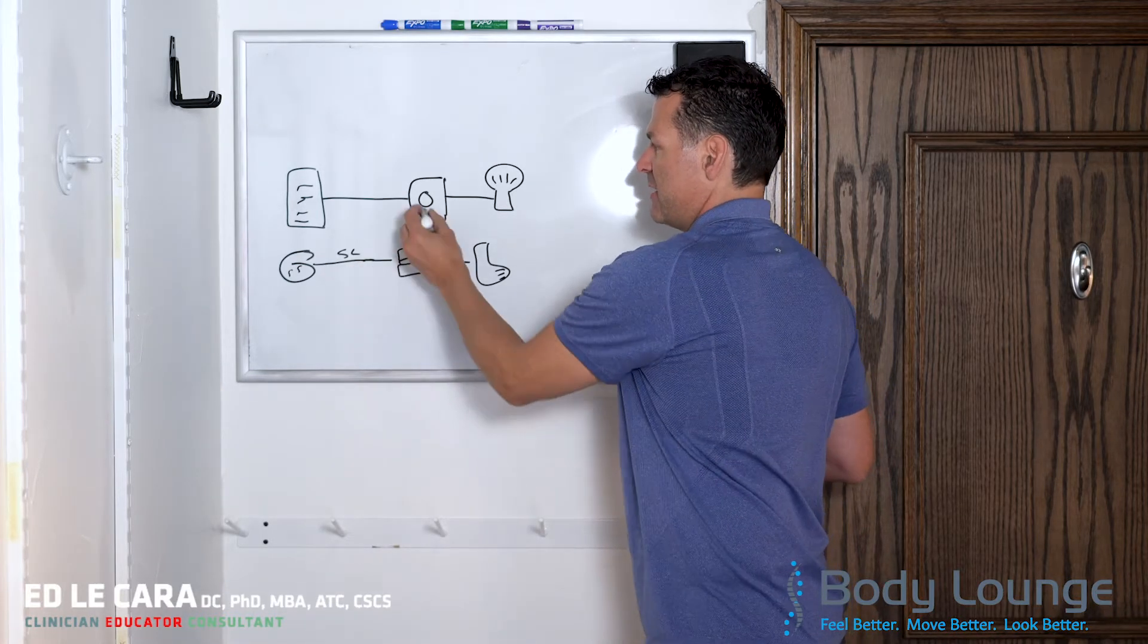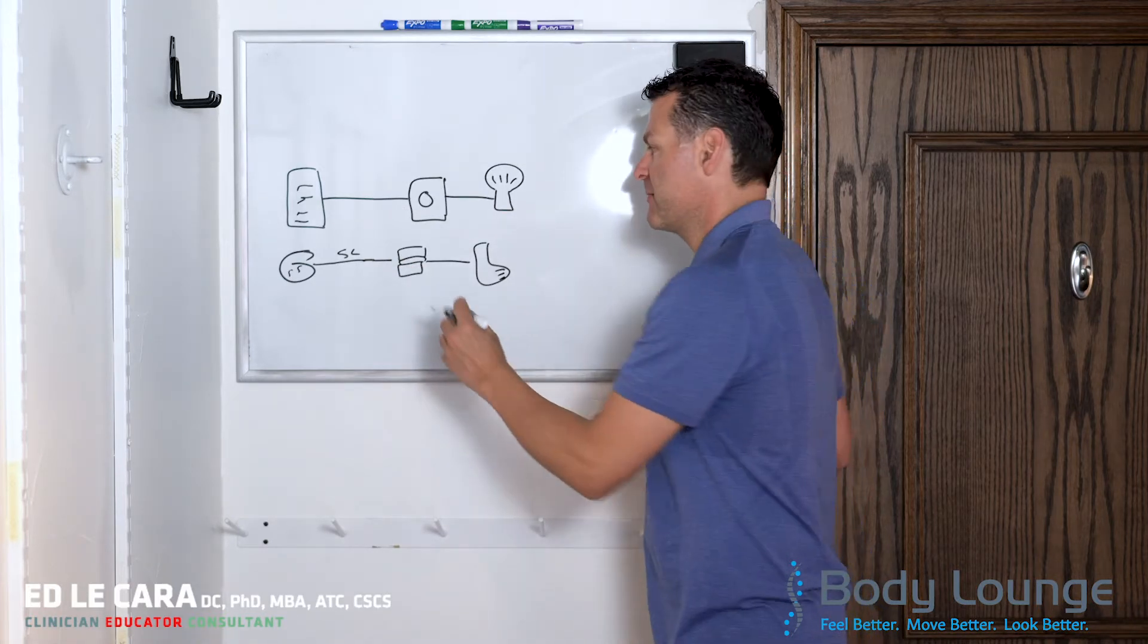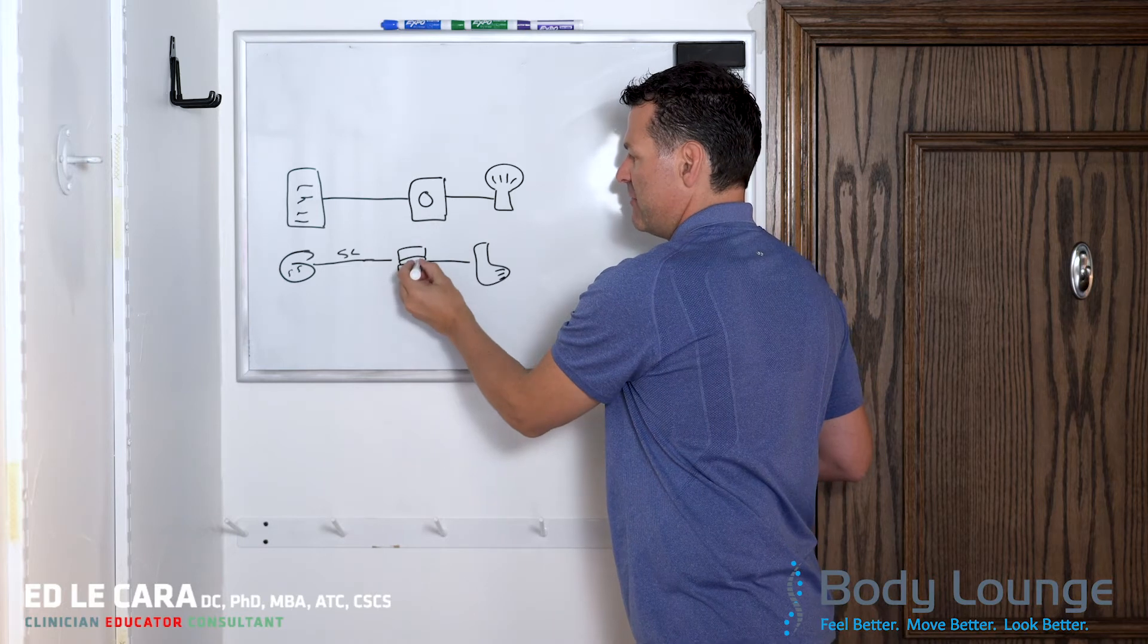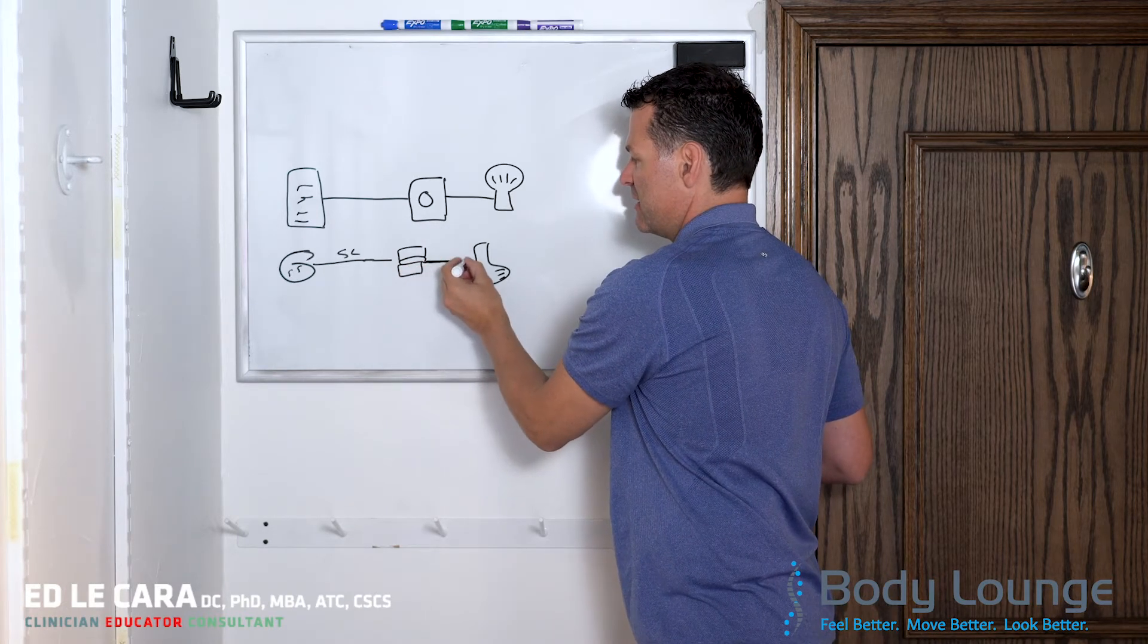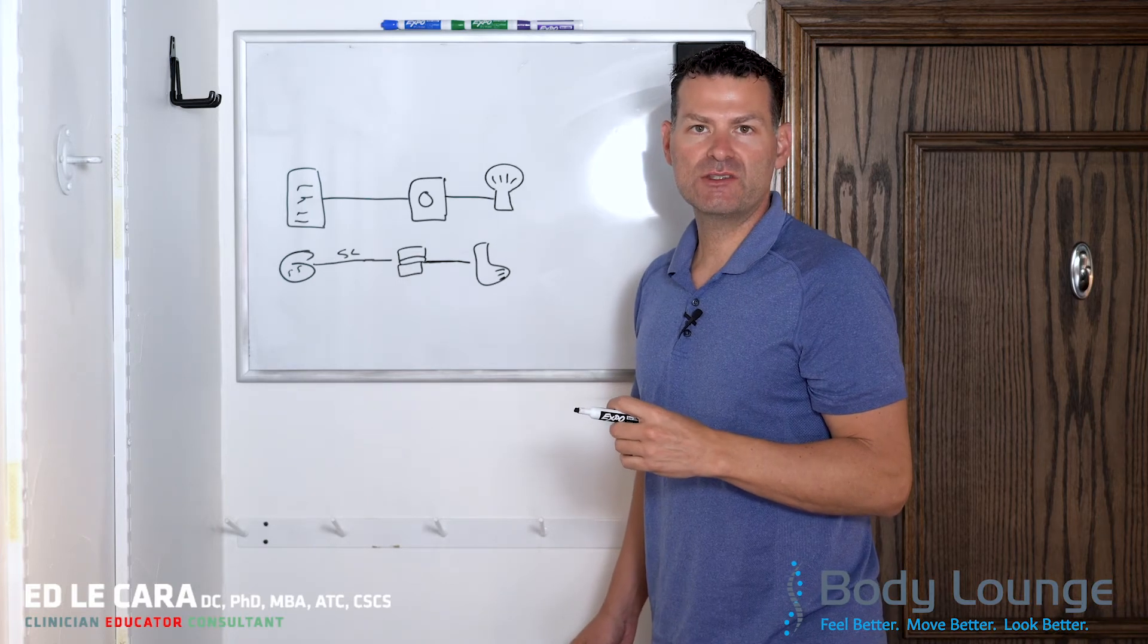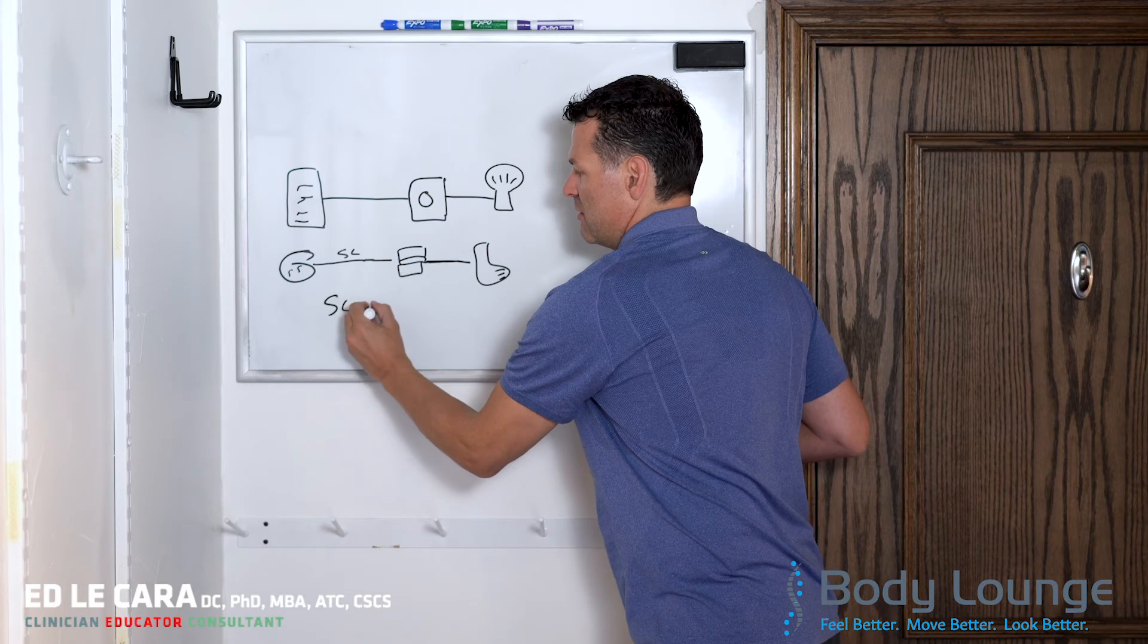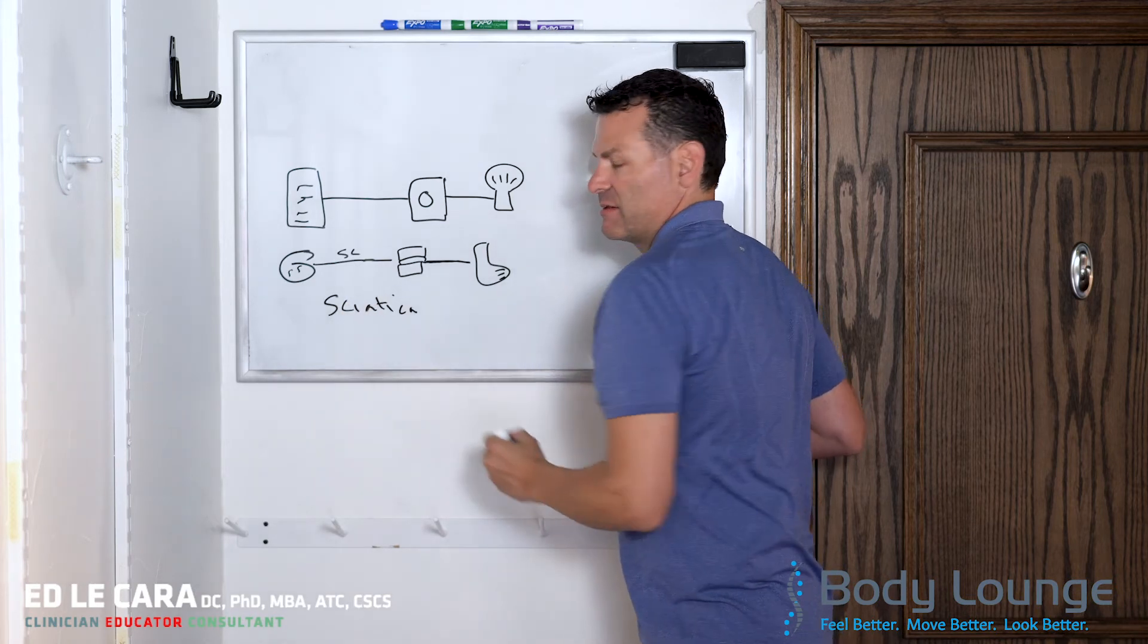A lot of times, right where it exits out of the vertebrae is acting more as a dimmer. And if I turn down the ability for the nerve to conduct, I get numbness, tingling, burning, those types of symptoms, into the extremity. And that is a term that we call sciatica.